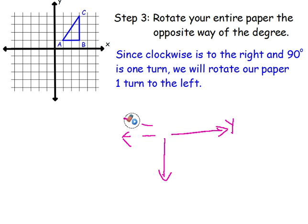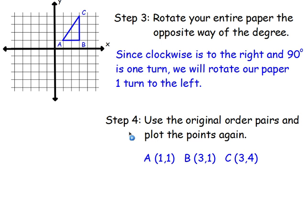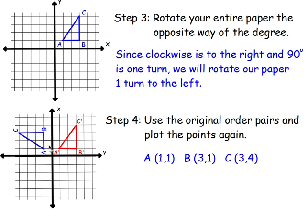Step four is we're going to use our original ordered pairs and plot the points again. So (1,1), (3,1), (3,4). So we've rotated our picture — here's our original shape. We just plotted our points again. A was (1,1), so we went one, one. B was (3,1) — three to the right, one up. C was three to the right, four up. And remember, since we moved them, we call those primes. All we did was rotate our entire paper the opposite way of the degrees.